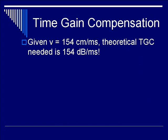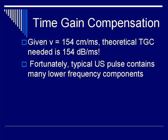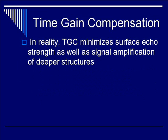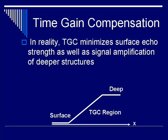Specifically, let's talk about time gain compensation. In principle, since the velocity of sound is 154 cm per ms, if there is 1 dB per cm loss in amplitude, the theoretical time gain needs to be 154 dB per ms. Unfortunately, a typical ultrasound pulse contains many lower frequency components, which do not require as much compensation as theoretically expected. Also, lower velocity tissues such as fat lessen the compensation requirements as well. In reality, TGC minimizes surface echo strength as well as signal amplification of deeper structures, such that you get a characteristic curve.